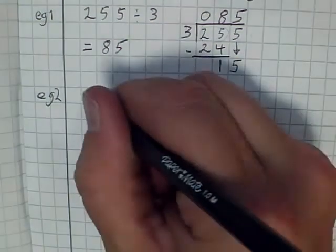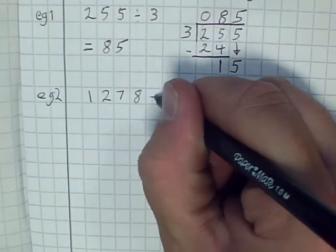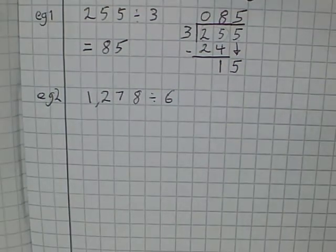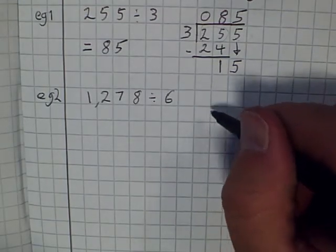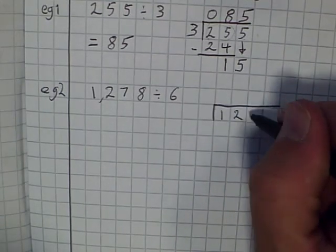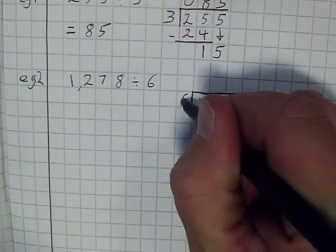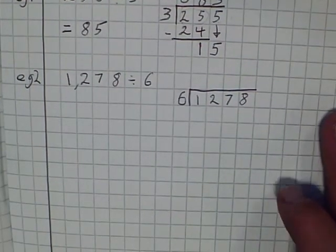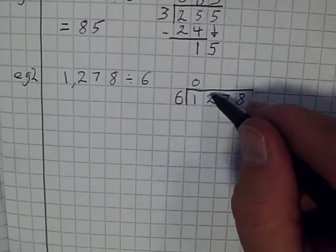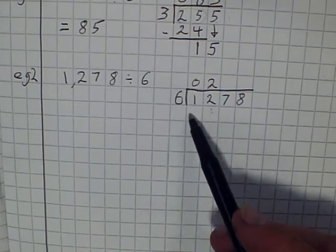Second example. Let's have a look at what might be 1,278 divided by 6. So I'm going to create my bus stop. 1,278, that's the number that's being divided, being divided by 6 or being split into 6 equal groups. So how many times does 6 go into 1? Not at all. How many times does 6 go into 12? Well, it goes in exactly 2 times.